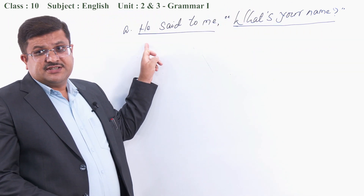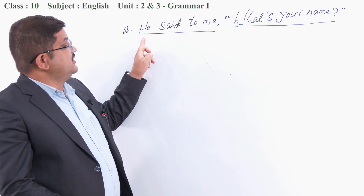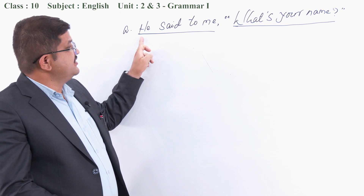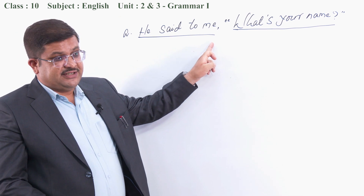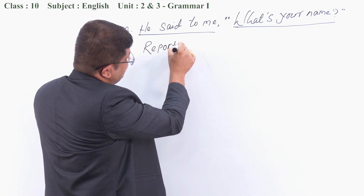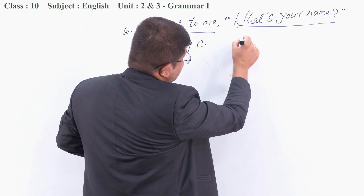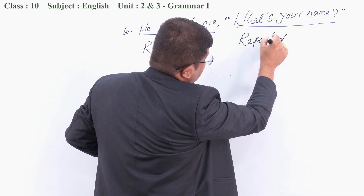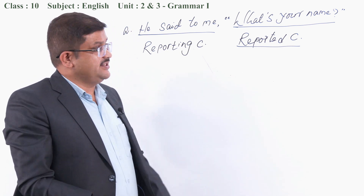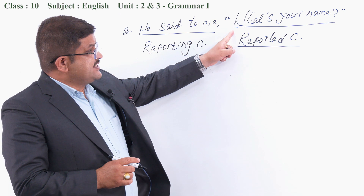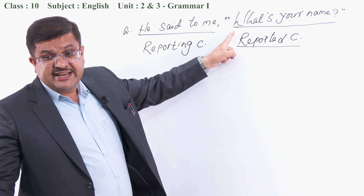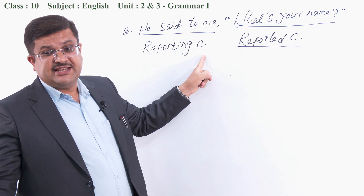In the reported clause, there is also a subject, a verb, and an object. This sentence is known as an interrogative sentence. Now we are changing this sentence into indirect speech. This is a direct speech. How do we identify direct and indirect speech? When the reported clause is in inverted commas, we know that the sentence is known as direct speech.